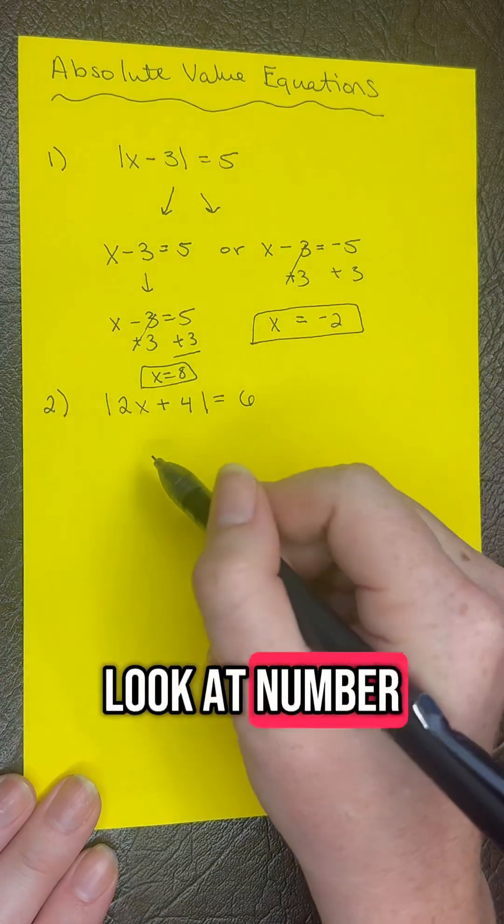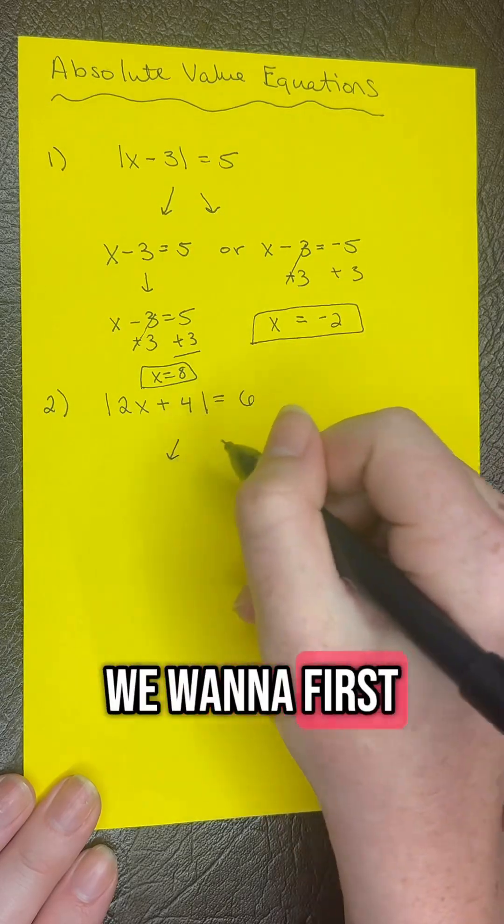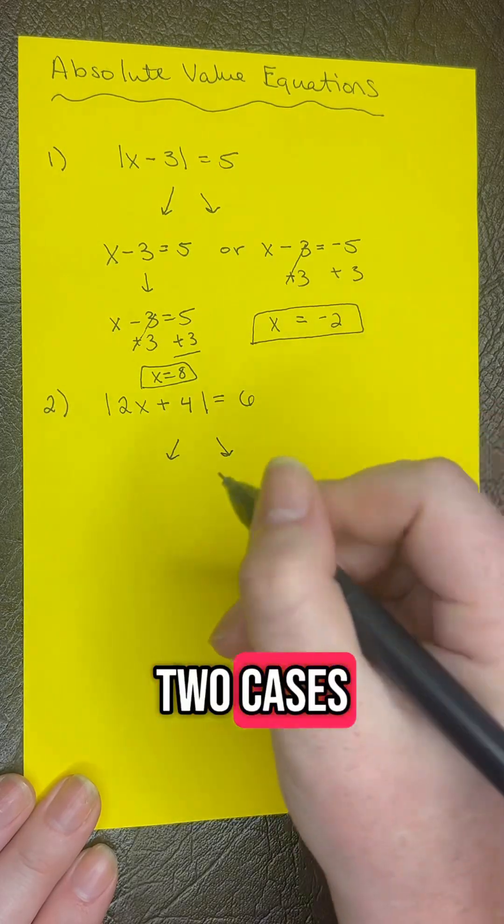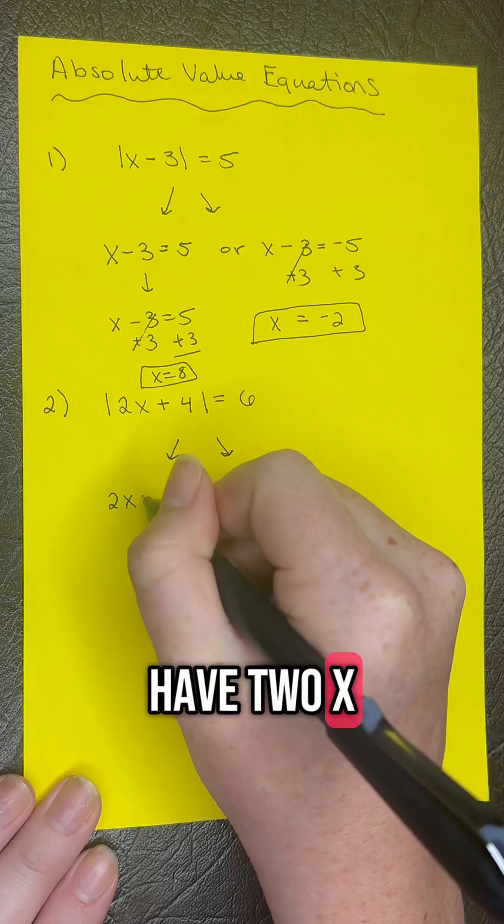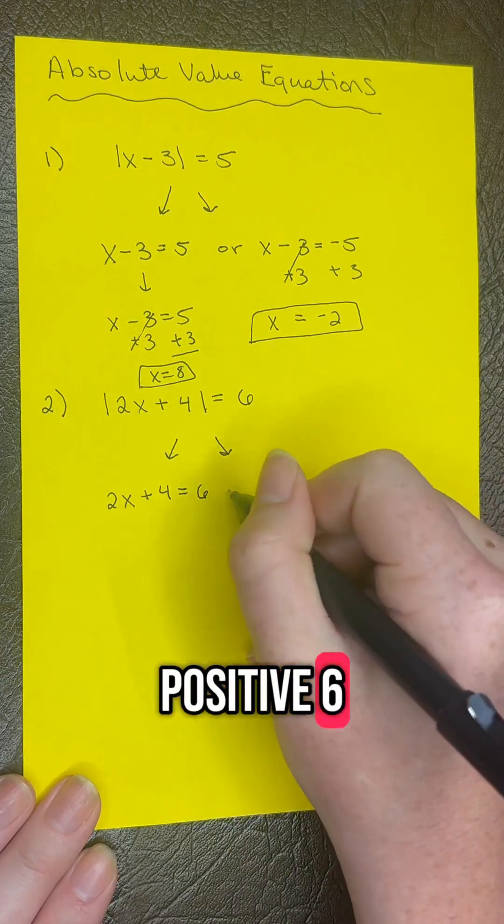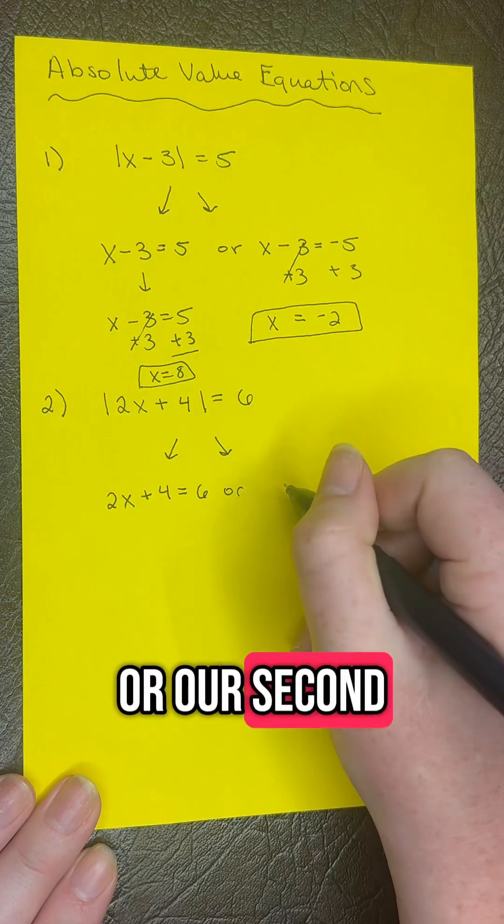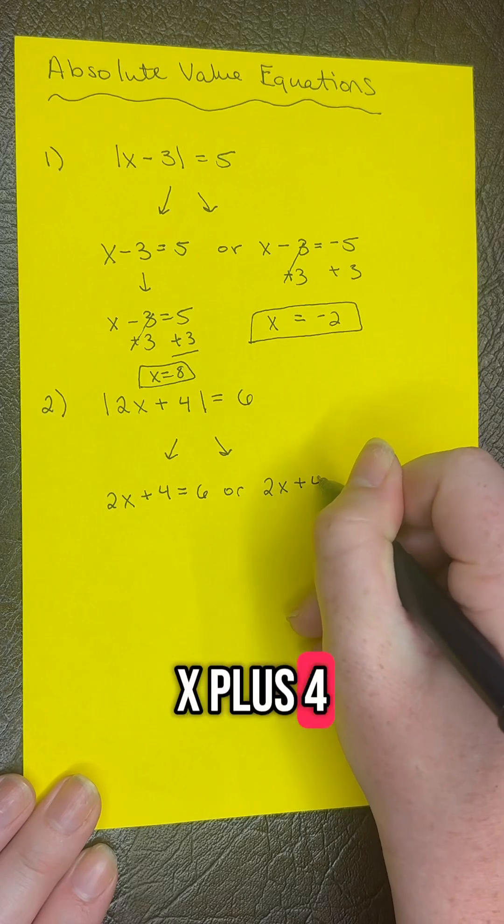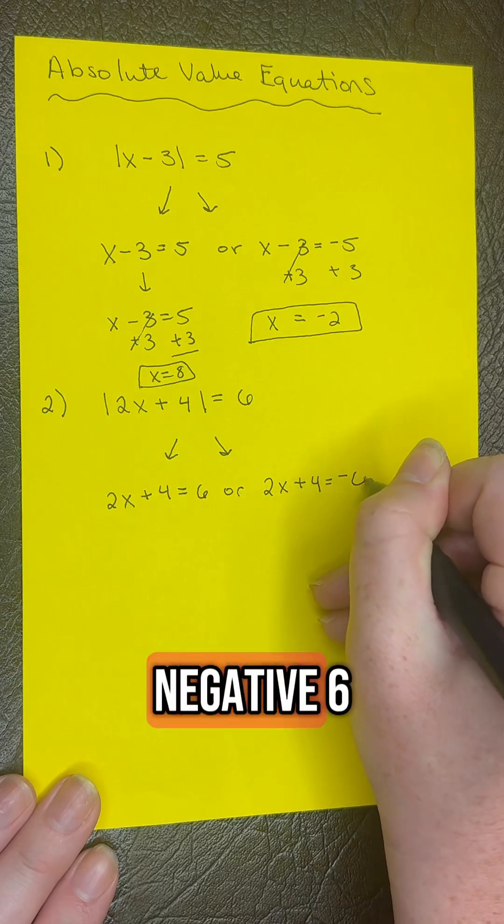Let's take a look at number 2. Same concept - we want to first set up our two cases. We have 2x plus 4 equals positive 6, or for our second case, 2x plus 4 equals negative 6.